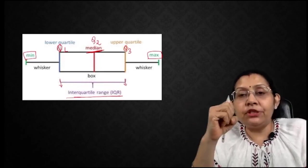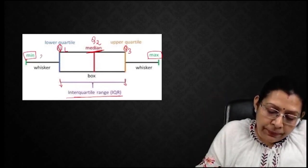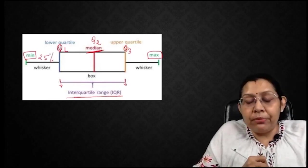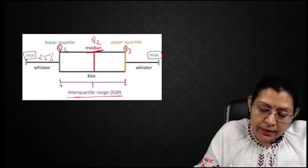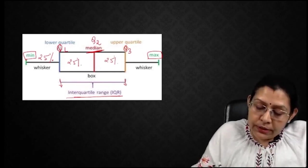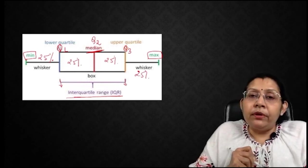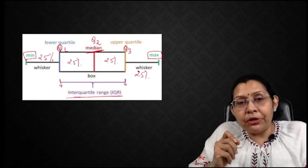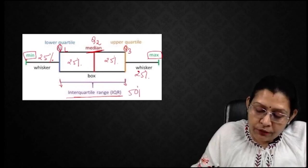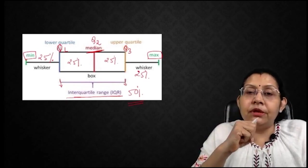Now, how much percentage of values correspond to each quartile? Between the minimum value and the first quartile it covers 25%, between the first and second quartile it is again 25%, between the second and third quartile it is again 25%, and beyond the third quartile again 25%, making the total 100%. Very commonly they ask how much percentage of values are between the first and third quartile — that is the interquartile range — and it is a total of 50%.